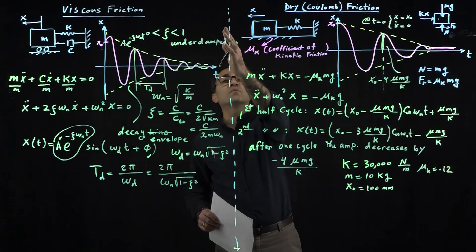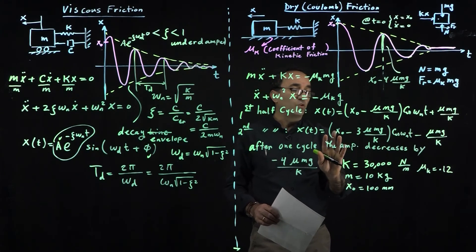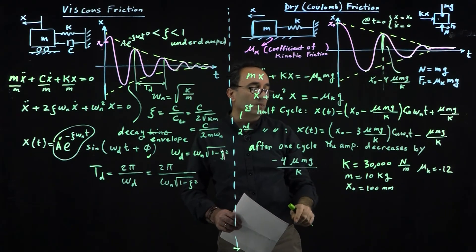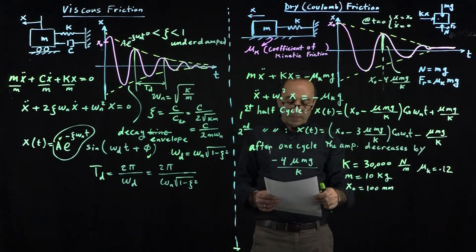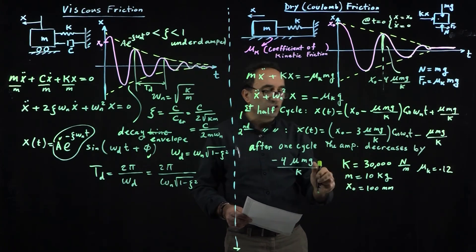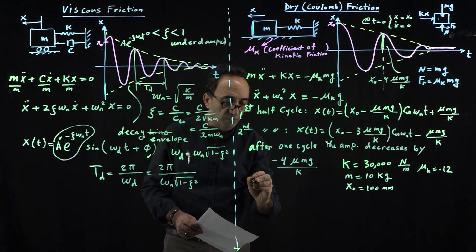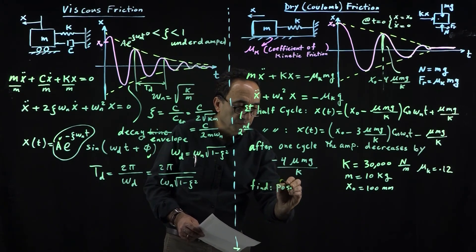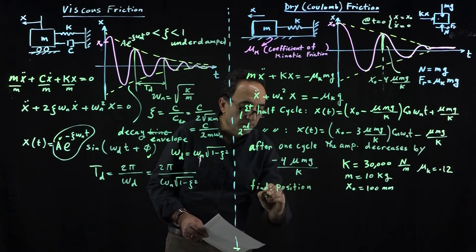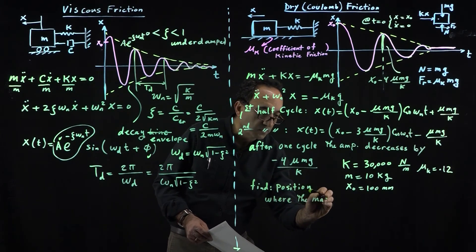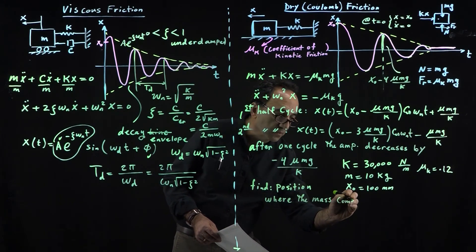Let's say the coefficient of kinetic friction is 0.12, so not much friction. The question is, if you have this system, give it some initial position with zero velocity, with the given properties we have here, where does this come to rest? Find the position where the mass comes to rest.